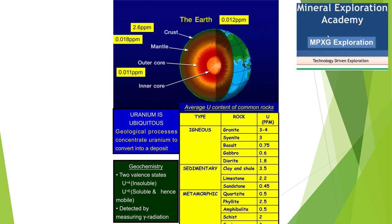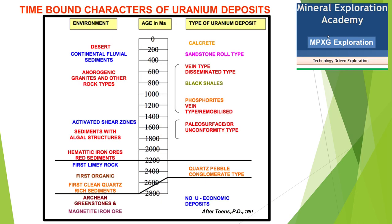Uranium-4 (tetravalent uranium, U4+) is mostly insoluble. When it comes into soluble form after reactions with water, it becomes uranium hexavalent (U6+) and becomes soluble. When it is oxidized from U4+ to U6+, it becomes mobile and travels in the rock formations, in joint planes and weak planes. Anywhere it finds a reducing environment, it gets reduced back to U4+, becomes insoluble again, and that is how its concentration is formed in nature.